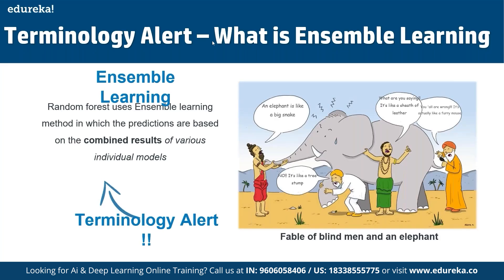Random forest is based on the idea of bagging, which reduces variation in predictions by combining the results of multiple decision trees on different samples of the dataset. This is ensemble learning — predictions are based on combined results of multiple individual models. Think of the analogy of blind men and an elephant: each person gives a different input, and combining all those different perspectives gives a better result.